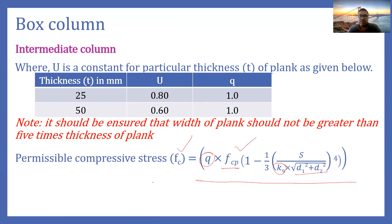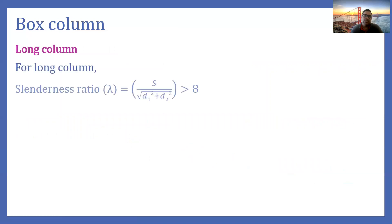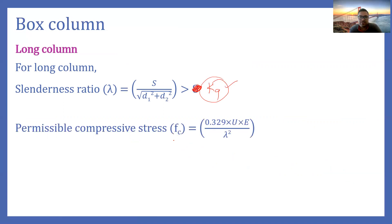The long column is classified when lambda is greater than k9. For a long column, the permissible compressive stress fc is given by the relation: fc equals u times E times 0.329 divided by lambda squared, where u is from the table, lambda is the slenderness ratio, E is Young's modulus, and 0.329 is a constant.